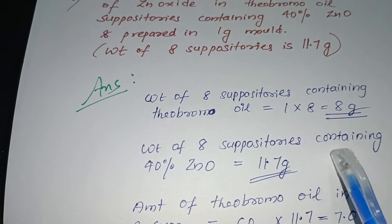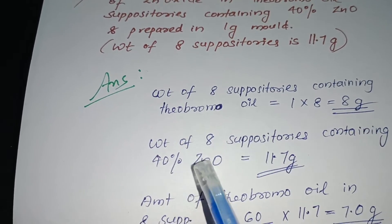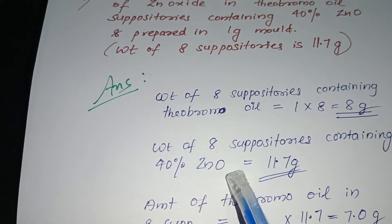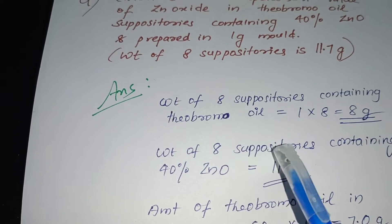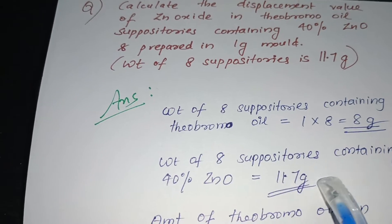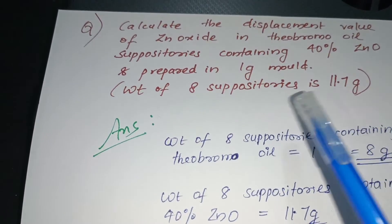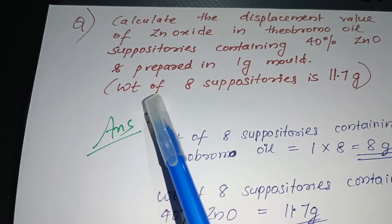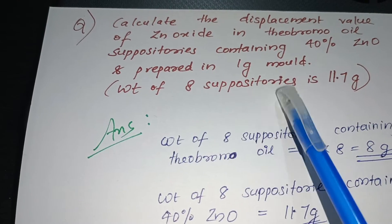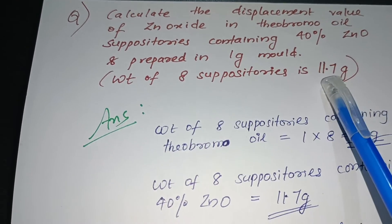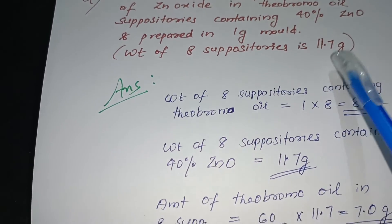The weight of 8 suppositories containing 40% zinc oxide — that is, the medication-containing suppositories — is 11.7 gram, as already given in the question.